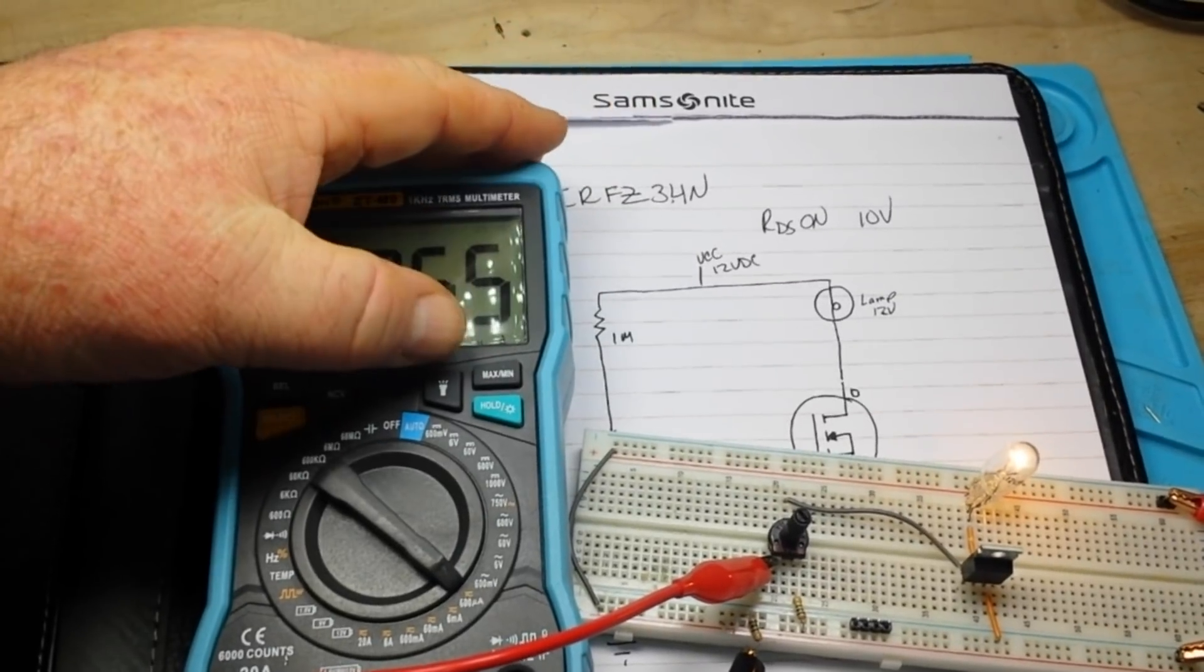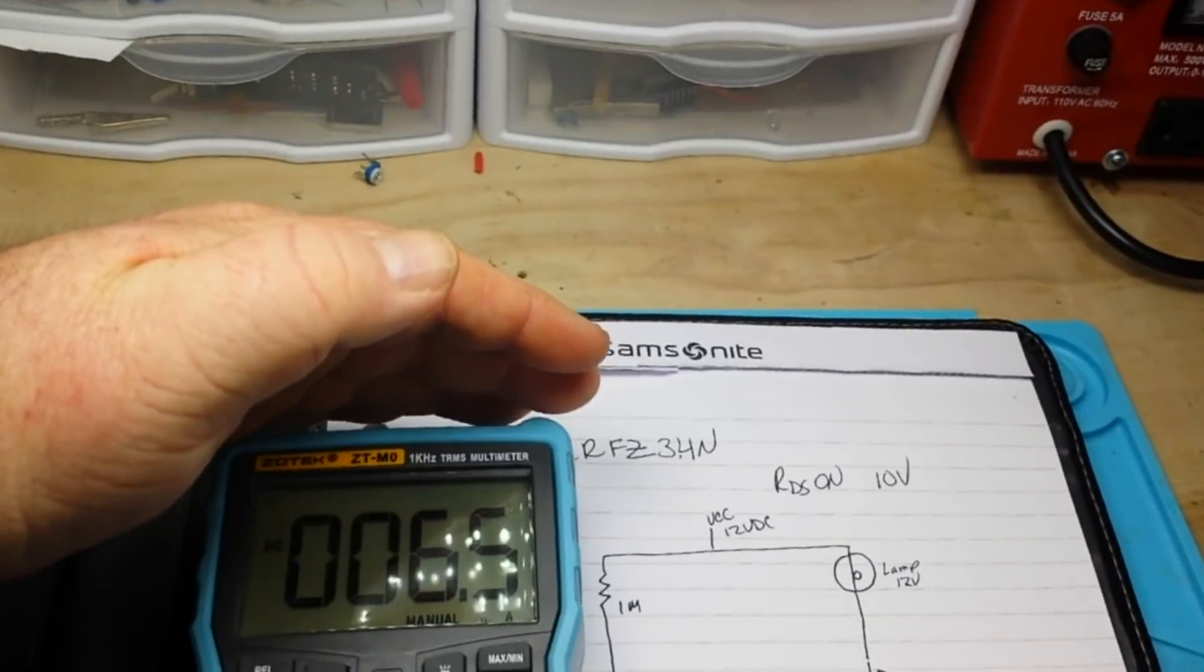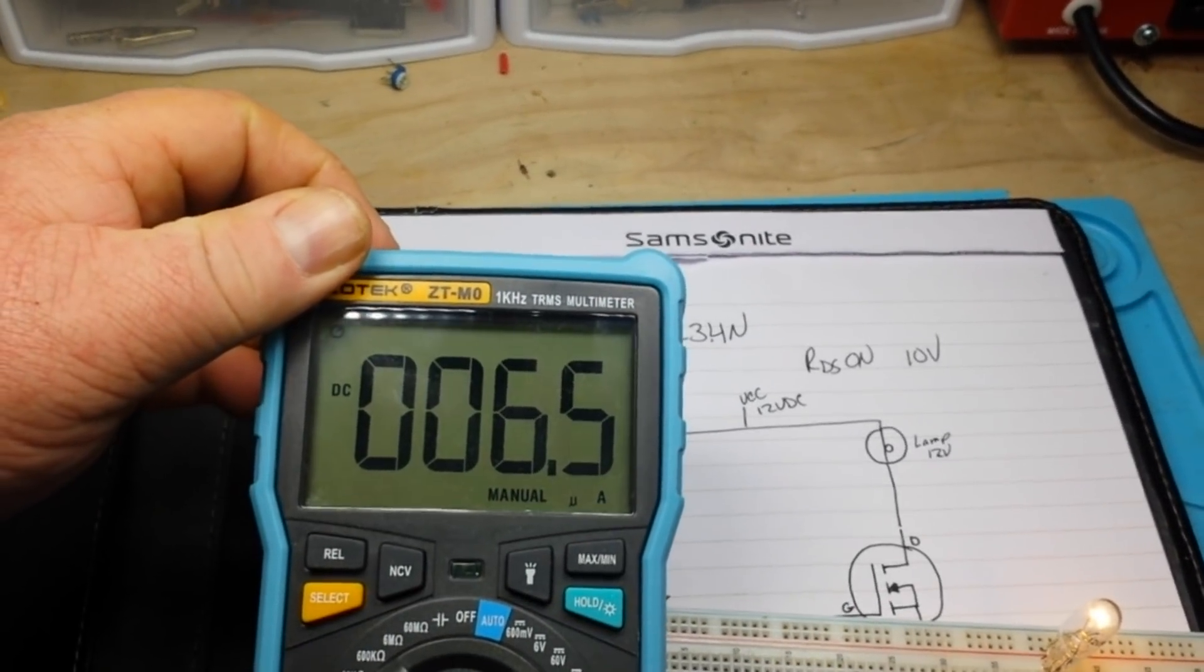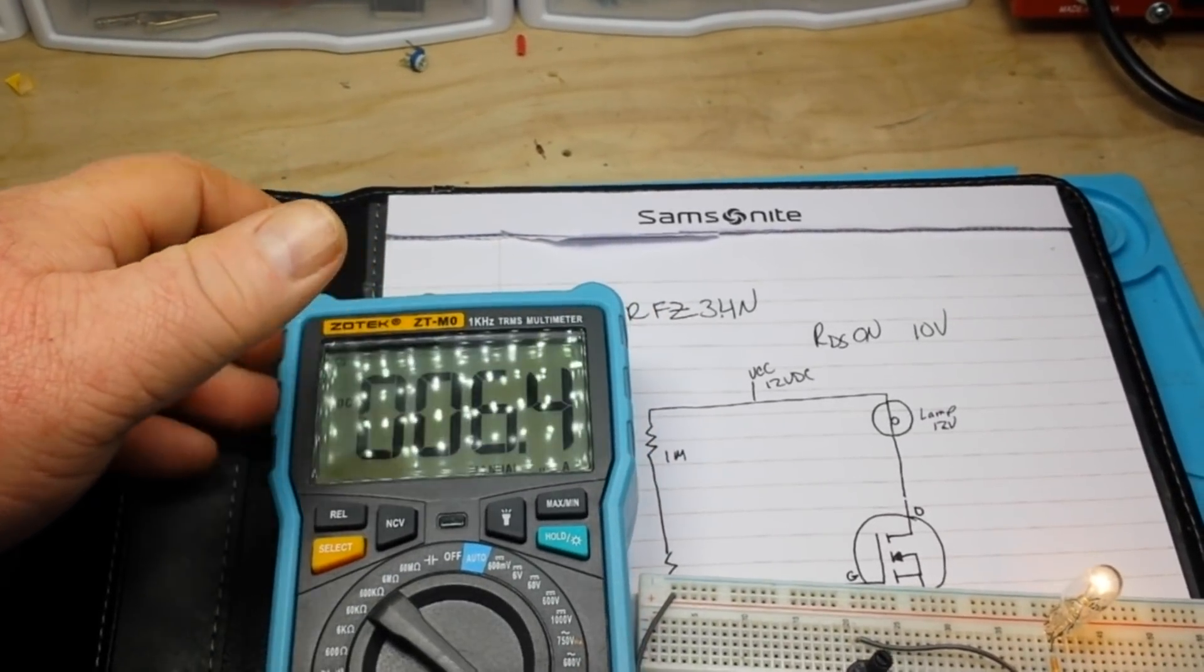I'm going to turn it on. I don't know what you can see. I don't want to knock everything off there. We're actually looking at only 6.5 microamps to power that light.